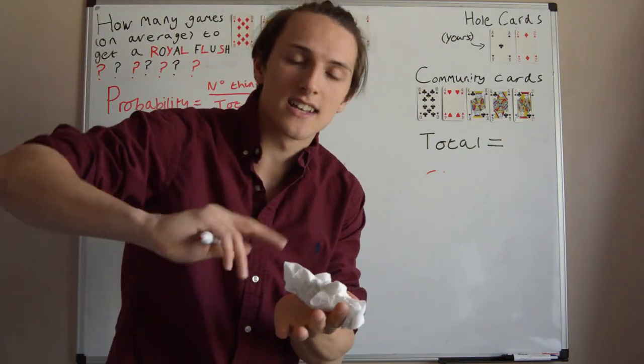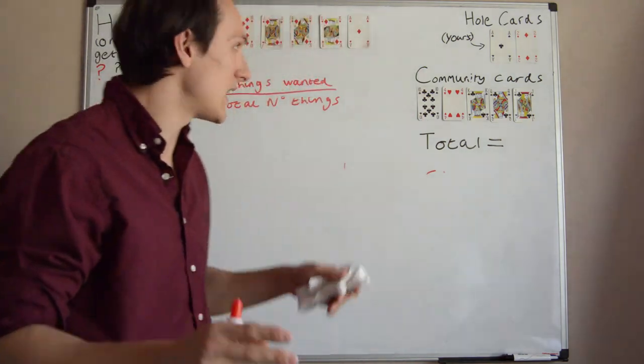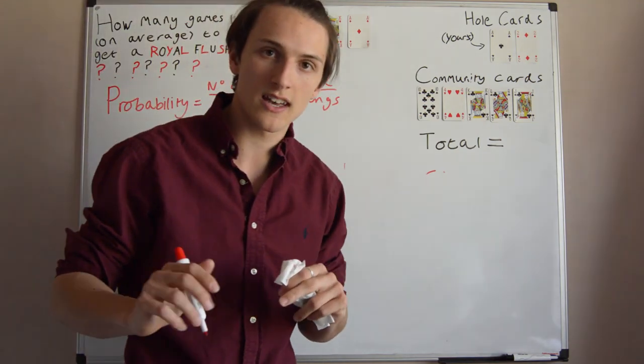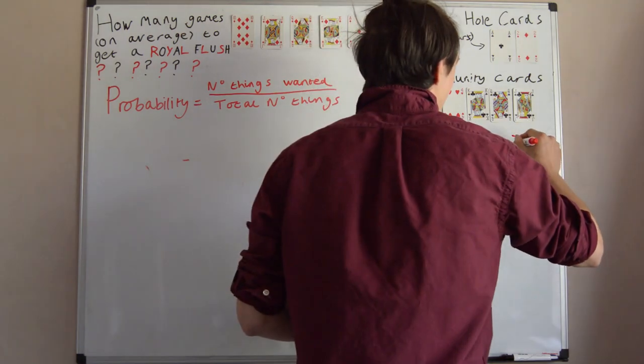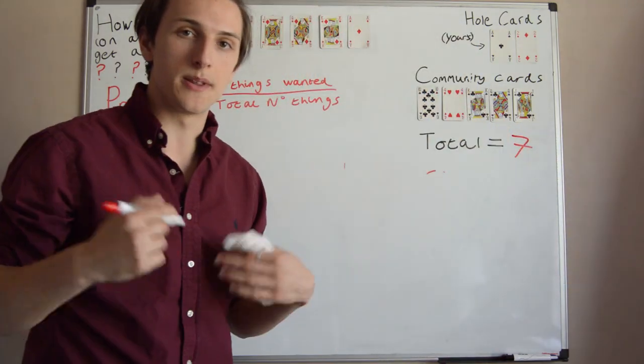So you have 2 cards, these are the cards that the dealer gives you at the start of the game and you also have 5 community cards. Don't need to worry too much about the details, all you need to know is that in total we have 7 cards to play with.